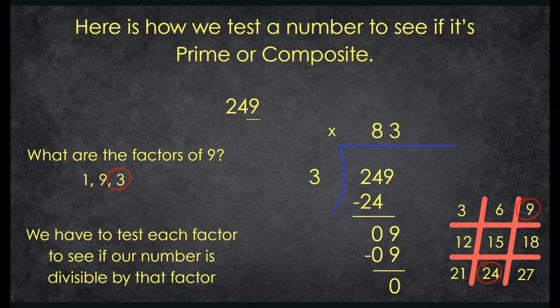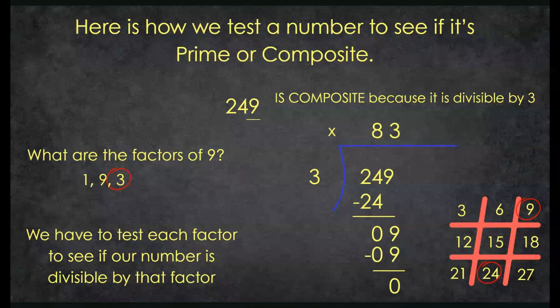3 times 83 makes 249. So I have two ways to make 249 — 1 times itself, and 3 times 83. Since there are two ways to make it, 249 is a composite number.